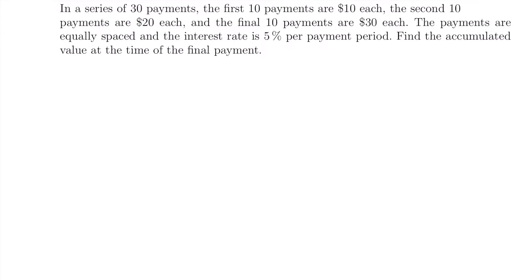Let's look at one more example. In a series of 30 payments, the first 10 payments are $10 each, the second 10 payments are $20 each, and the final 10 payments are $30 each. The payments are equally spaced and the interest rate is 5% per payment period. Find the accumulated value at the time of the final payment. Since the payments are not all the same value, we'll need three separate future value annuity calculations — one for each group of 10 payments.